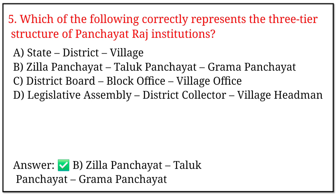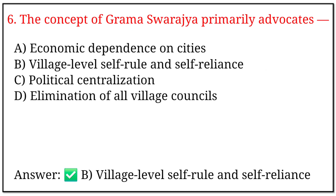5. Which of the following correctly represents the three-tier structure of Panchayat Raj institutions? Options a, b, c, and d. The correct option is b: Zilla Panchayat at the top level, Taluka Panchayat at the middle level, and Gram Panchayat at the bottom level. 6. The concept of Grama Swaraj primarily advocates — options a, b, c, and d. The correct option is b: village-level self-rule and self-reliance.